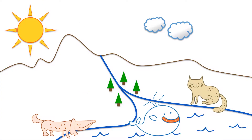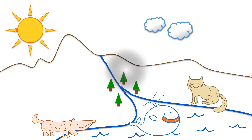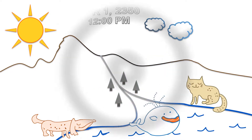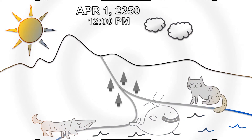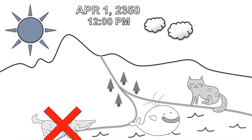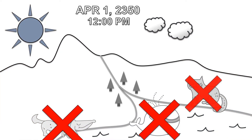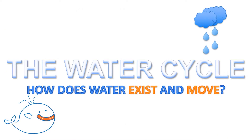Water is very important to our life. We can't live without water. If there was no water, there would be no life here on Earth. But how does water exist, and how does water move on Earth?